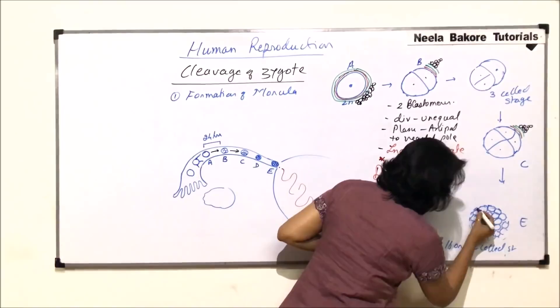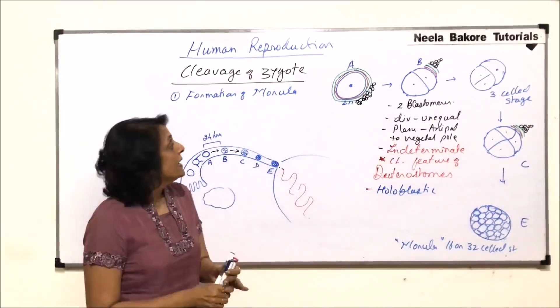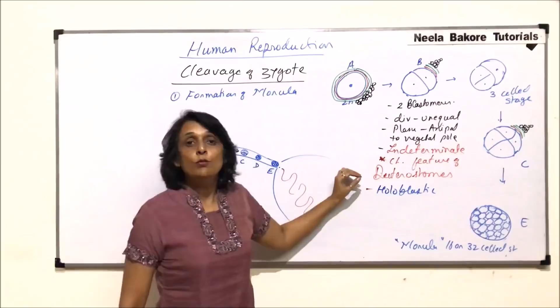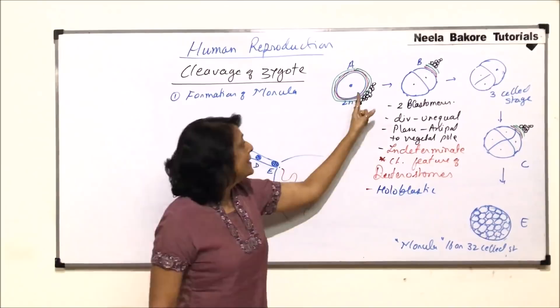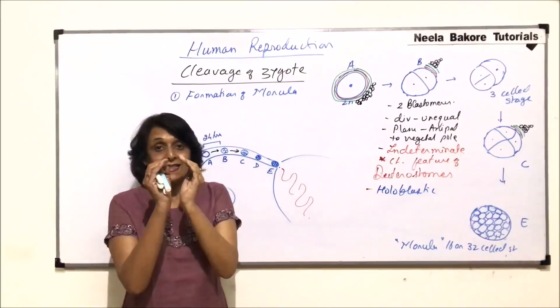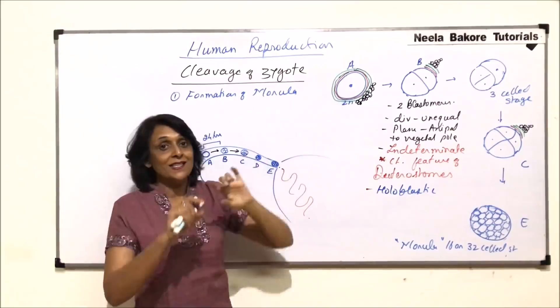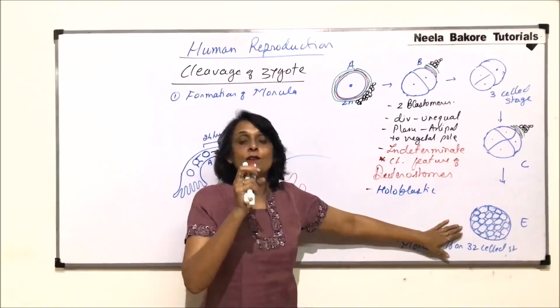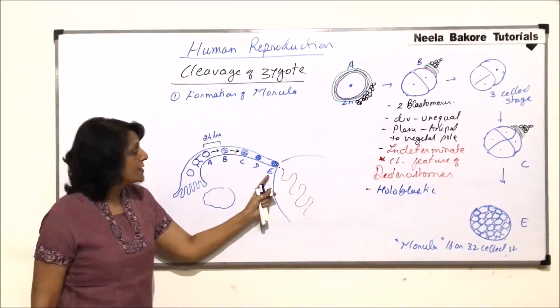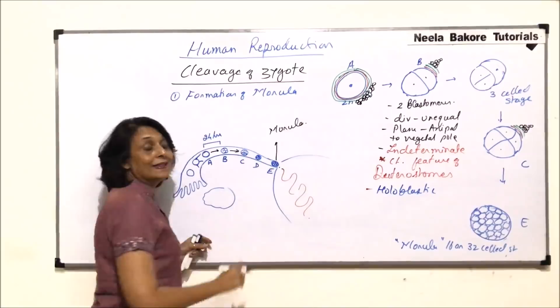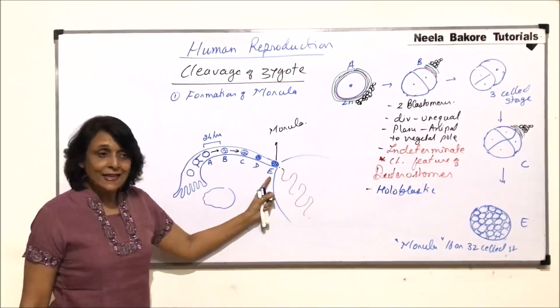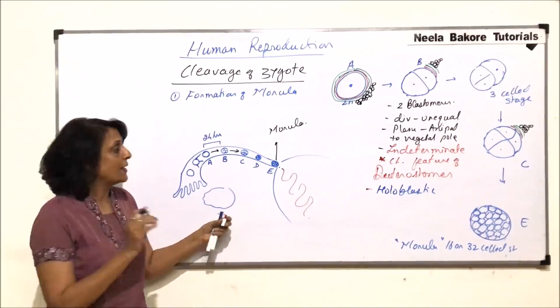The membrane — same membranes. If you actually see all these stages, you would realize that this size is pretty much the same, but the cell size is becoming smaller and smaller. The size of the original zygote structure is the same — it is still in the membrane. Only division is resulting into formation of smaller and smaller cells. In the morula stage, the zygote has divided up to 16 or 32 cells — it is a solid ball of cells.